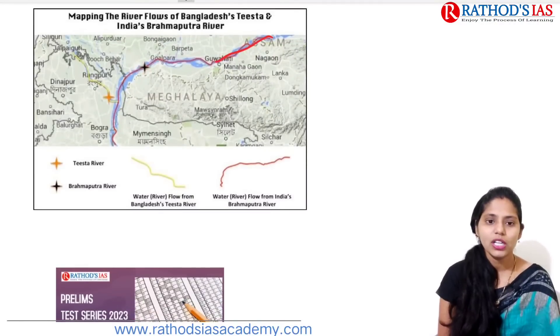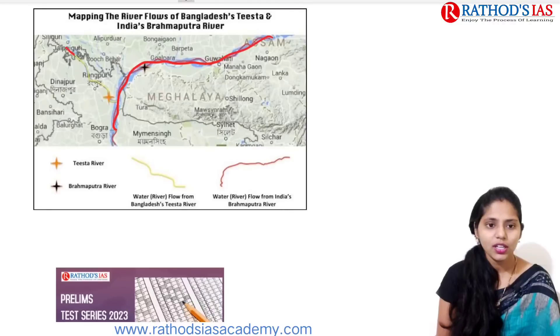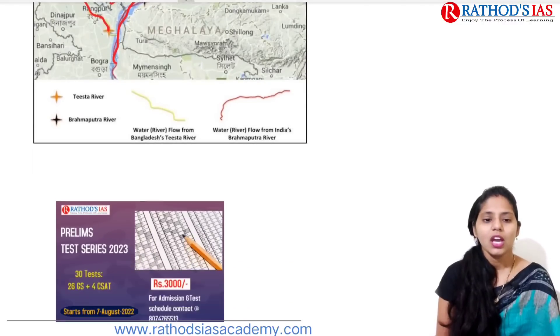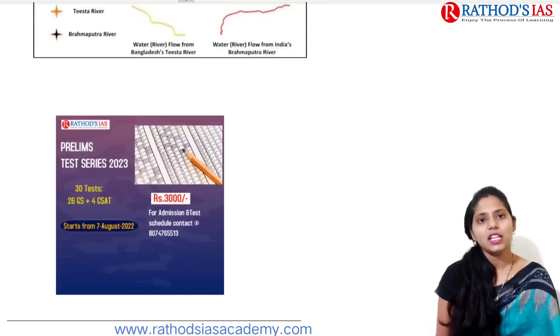On the map, the blue-colored river is the Brahmaputra and the yellow-colored river is the Teesta.